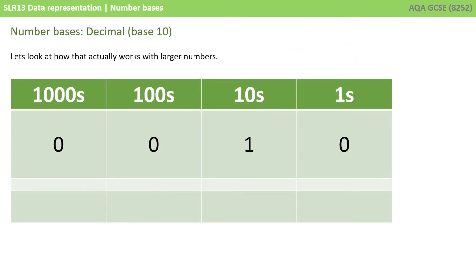Let's look at how that actually works with larger numbers. We'll start with a 10, and obviously I've written that out here. I've got two leading zeros on the beginning, but that doesn't affect the fact that this is the number 10. You will know from basic maths at primary school that the weighting of the headings in each of these columns goes up by 10 each time. So, what I have here is 0 thousands plus 0 hundreds plus 1 in the tens column plus 0 in the ones column, so the number 10.